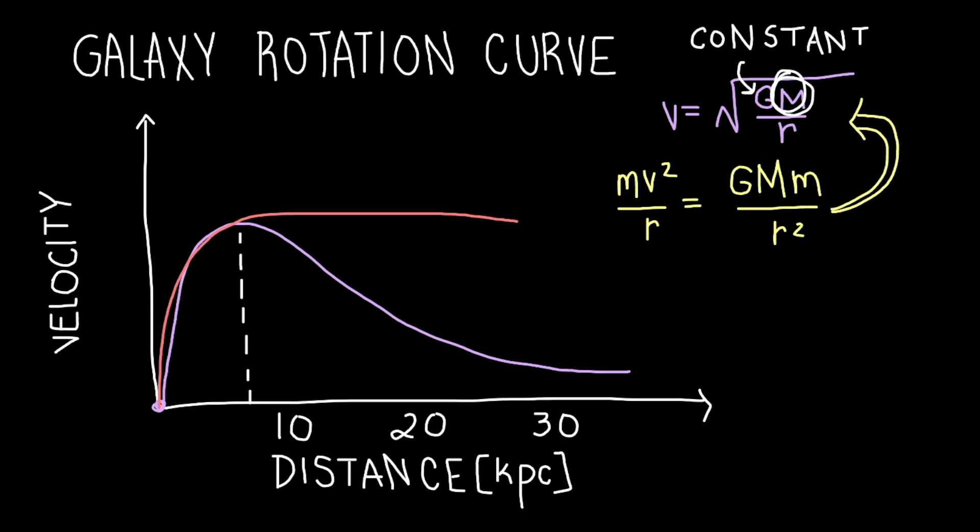A rotation curve is often calculated from observations of hydrogen, so rotation curves only extend out as far as there is neutral hydrogen.